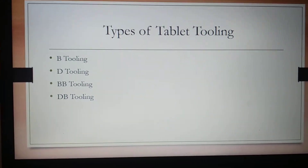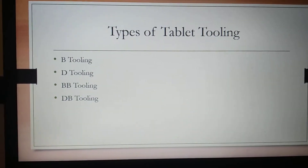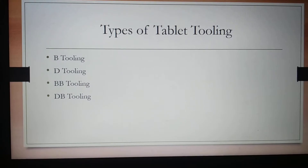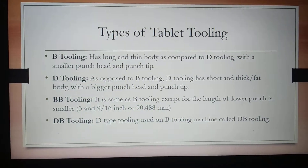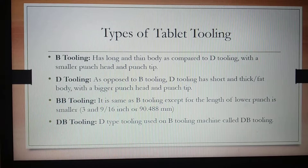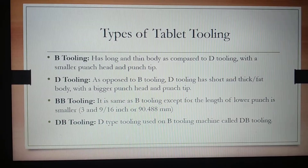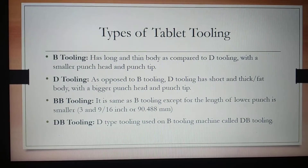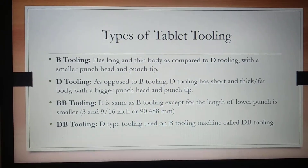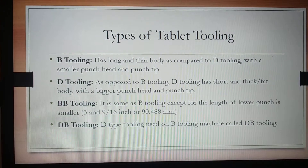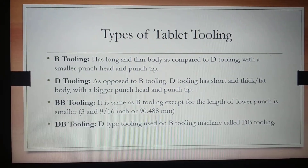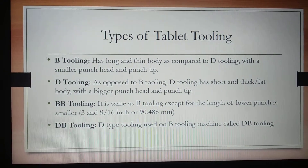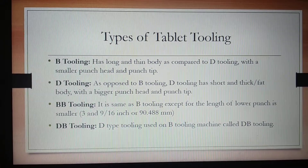There are two main types of tooling: B tooling and D tooling, and there are subtypes BB and DB tooling. B tooling has a long and thin body as compared to D tooling, and B tooling has a smaller punch head as well as a smaller punch tip, whereas D tooling has a short and thick or fat body.